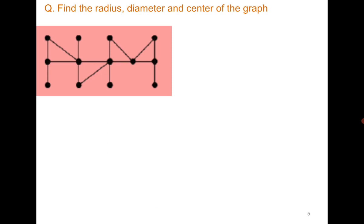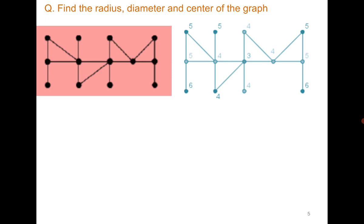Let us compute the radius, diameter, and center of the following graph. To do so we first need to compute the eccentricity of all the vertices. Please try it by yourself. You can see that the minimum eccentricity is 3 and the maximum is 6.